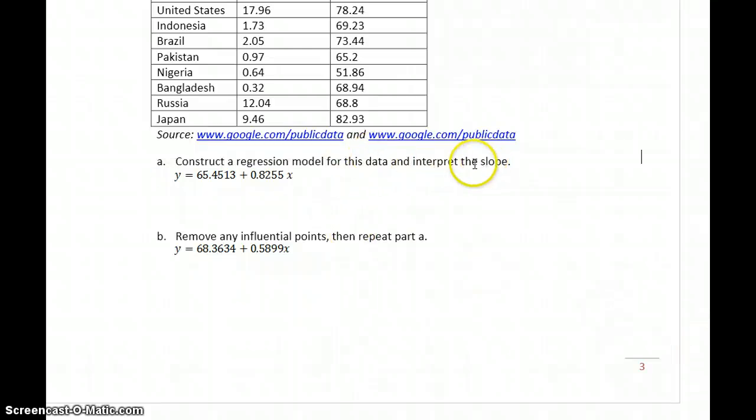We're also asked to interpret the slope. So, what we're saying in this case with the slope of 0.8255 is, as a country's carbon emission, CO2 emissions increase by one metric ton, life expectancy should go up by a little bit less than a year.